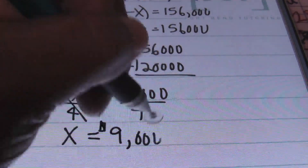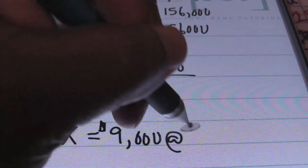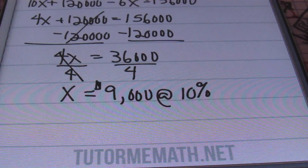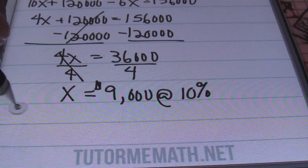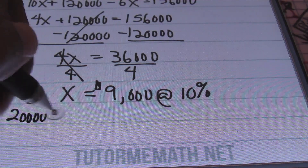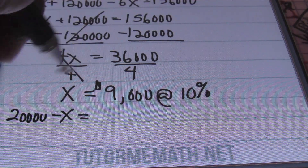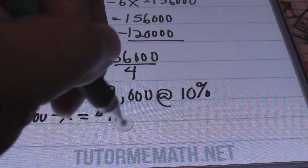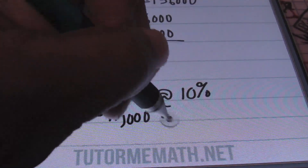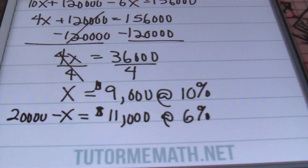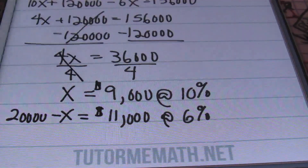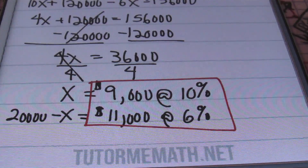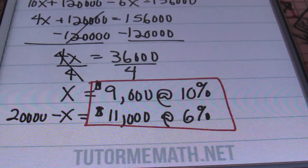So $9,000 is what she invested at 10%. To find what she invested at 6%, we use 20,000 minus X: 20,000 − 9,000 = $11,000 invested at 6%. And that's our answer for problem number one.